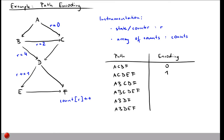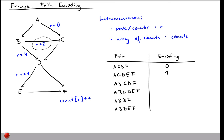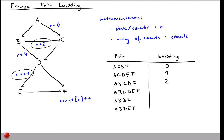For path ABCDF: taking edge B to C initializes R to 2, then we go to D and then to F without changing R, so the encoding is 2. For path ABCDEF: we initialize R to 2 at edge B to C, then also take the edge D to E adding 1, giving a final encoding of 3.